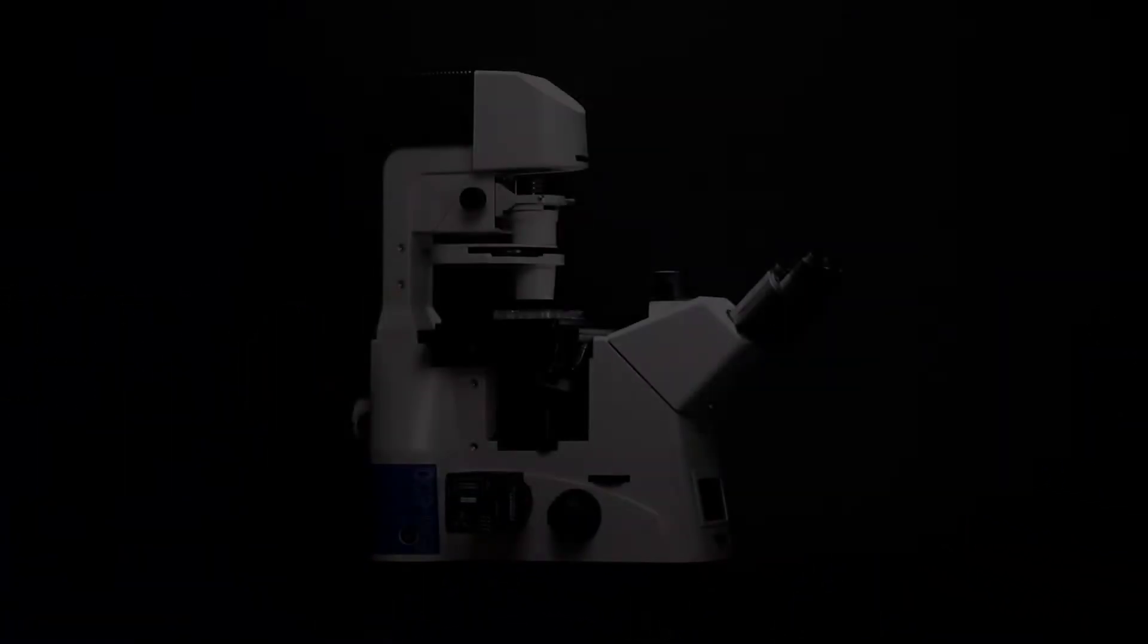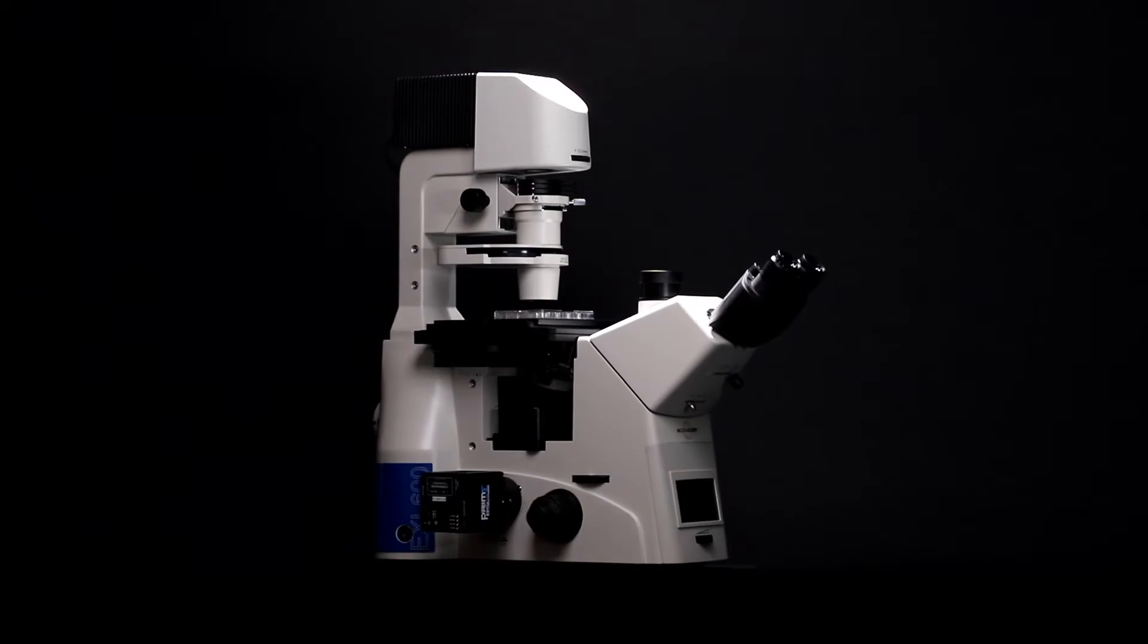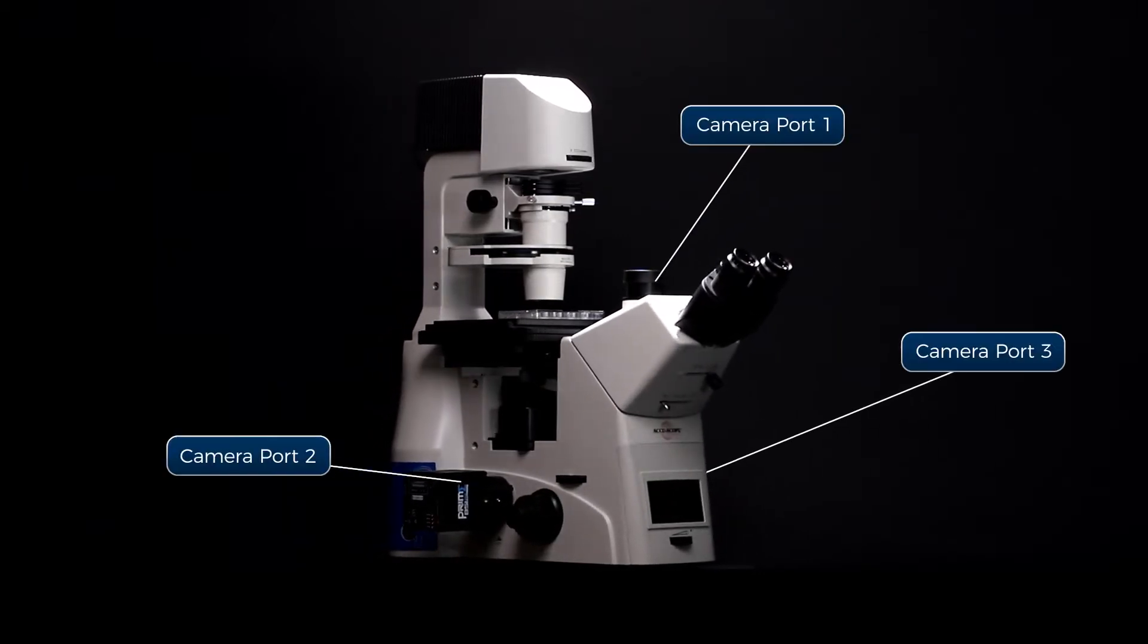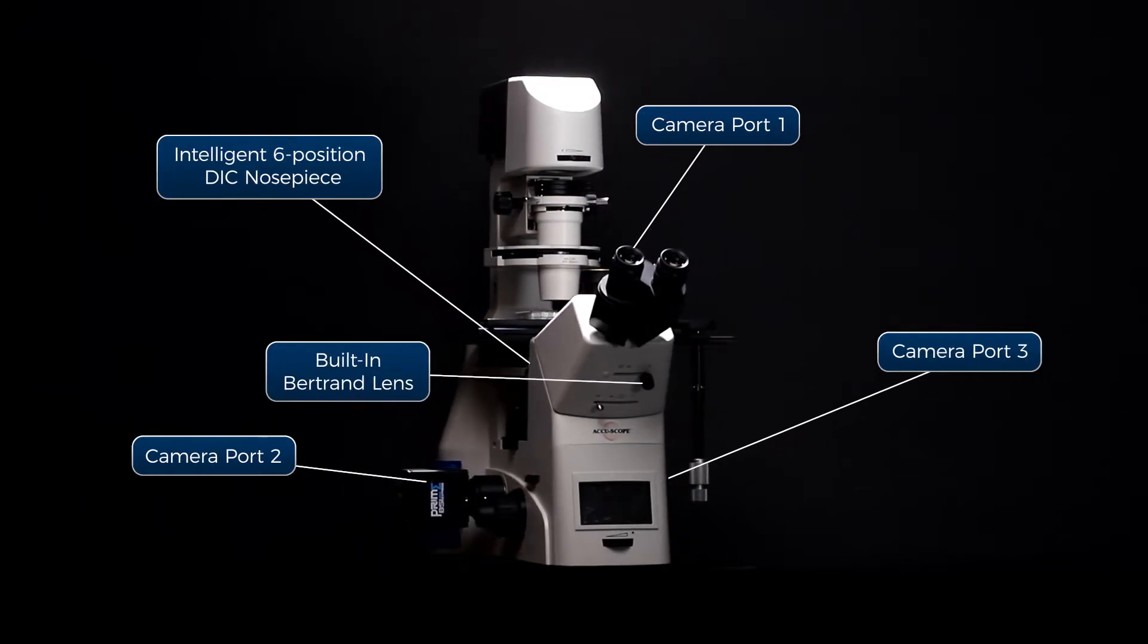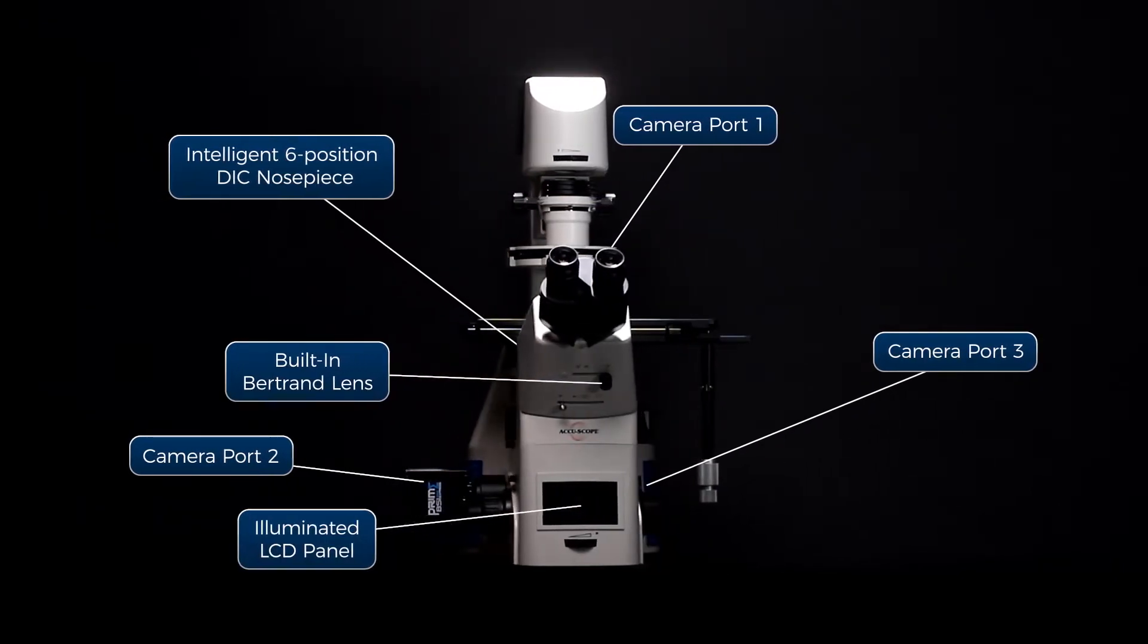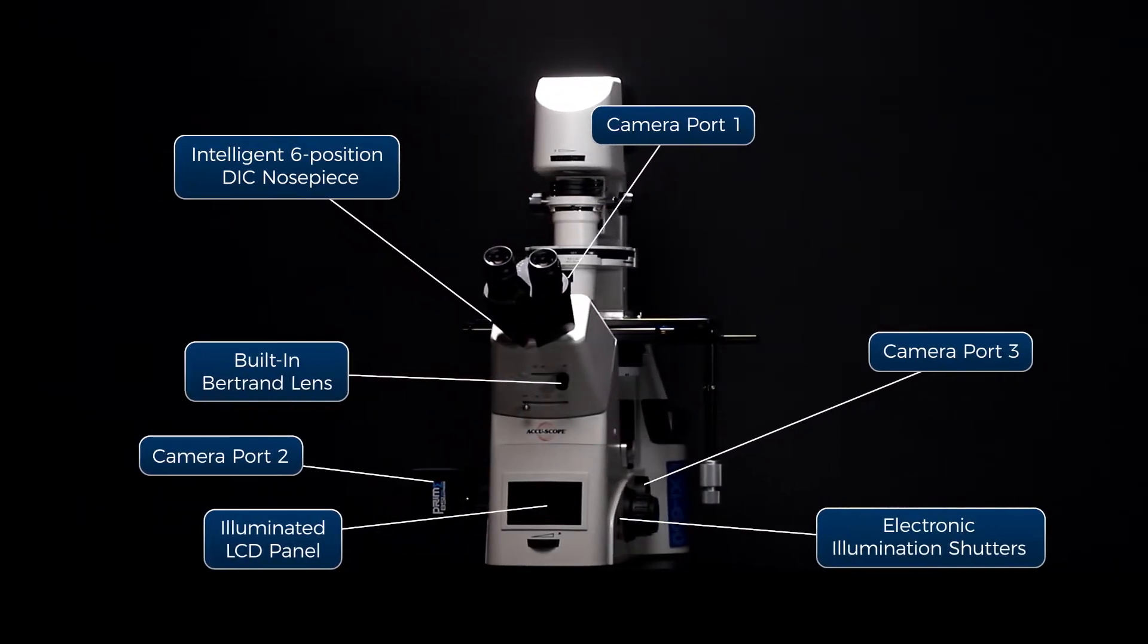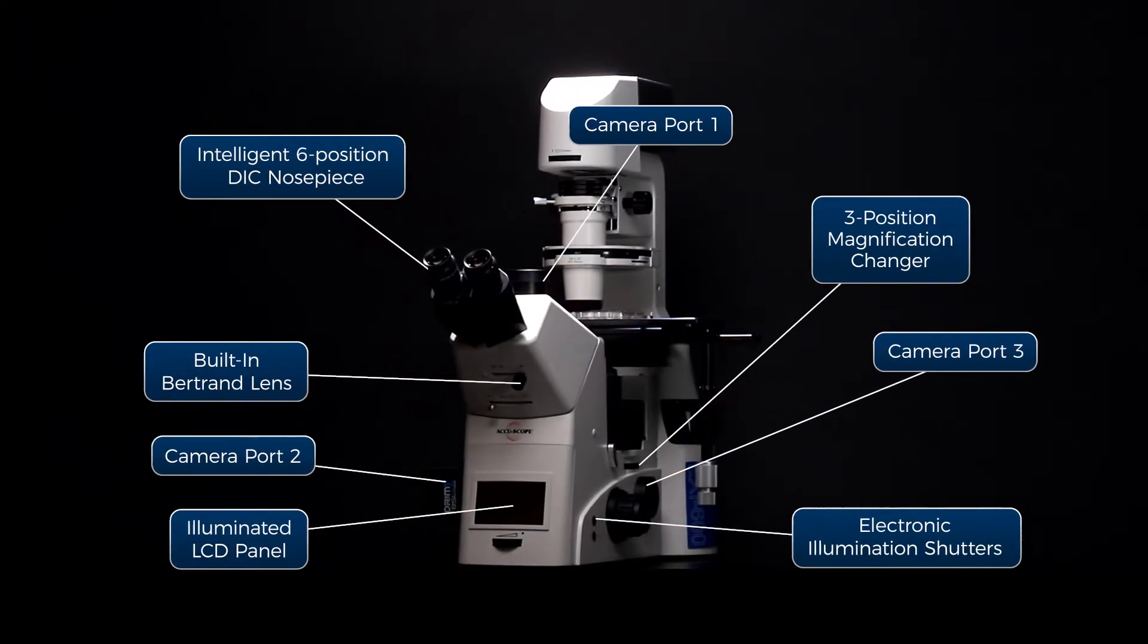Features typically offered as expensive options come standard on the EXI 600, including three camera ports, six-position DIC nosepiece, built-in Bertrand lens, illuminated LCD panel, illumination shutters, and three-position magnification changer.